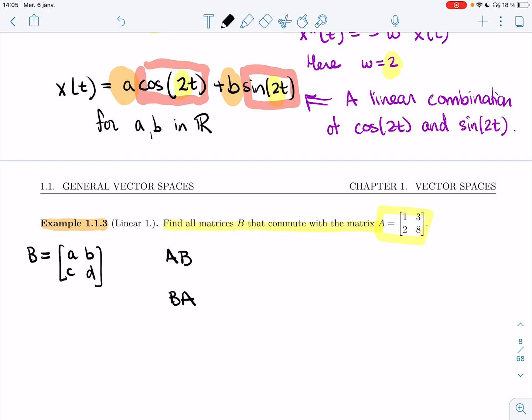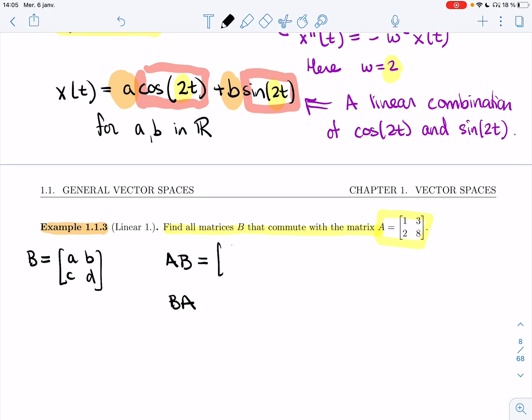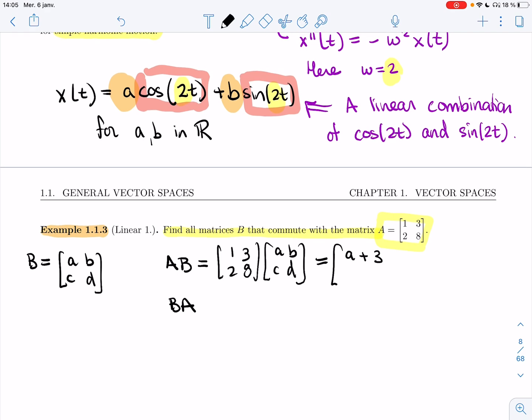Then we computed AB and BA. We wanted them to be equal - that's what it means for matrices to commute. So AB was 1, 3, 2, 8 times a, b, c, d. What we got here is a plus 3c, b plus 3d, 2a plus 8c, 2b plus 8d. If I switch the order of these two matrices, I'll get a plus 2b, c plus 2d, 3a plus 8b, 3c plus 8d.